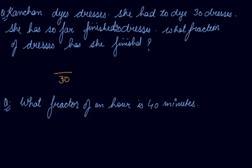How much has she finished? She has finished 20 dresses, so the fraction is 20 by 30. If we simplify, we can cancel the zeros. So, 2 divided by 3 is the fraction.